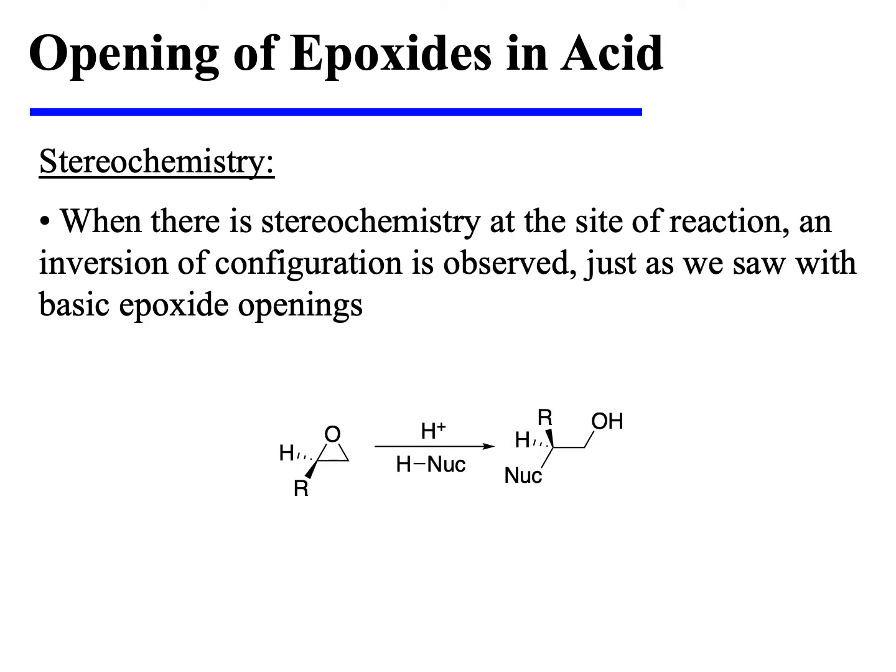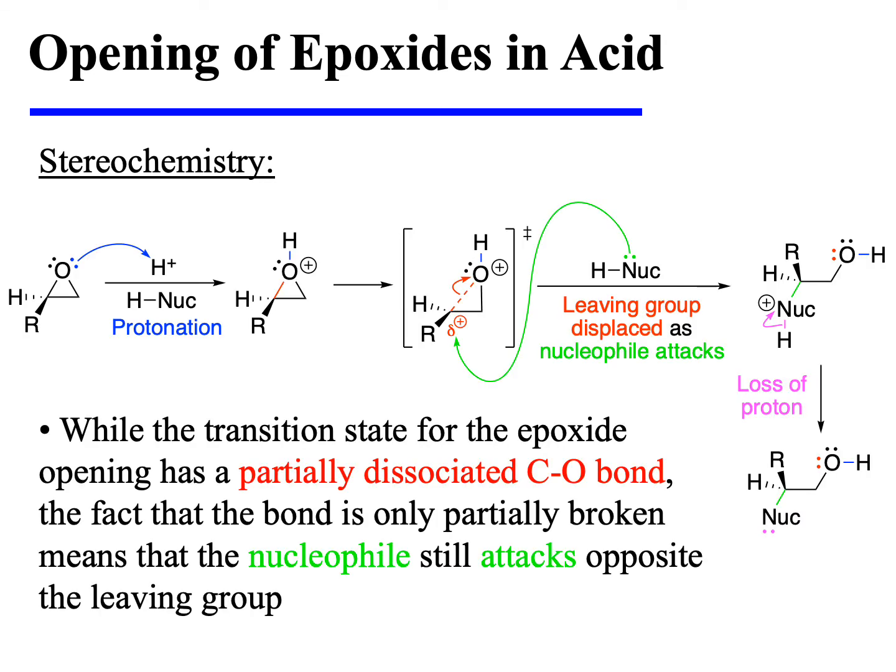When there is stereochemistry at the site of reaction, an inversion of configuration is observed, just as we saw with basic epoxide openings. While the transition state for the epoxide opening has a partially dissociated carbon–oxygen bond, the fact that the bond is only partially broken means that the nucleophile still must attack from the opposite side relative to the leaving group. And this is the source of the inversion of configuration.